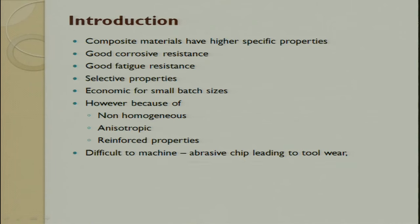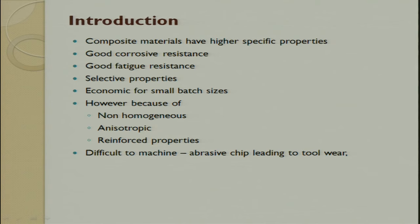The key differences: in contact machining the tool must be harder than the work piece; in non-contact it is not so. Second, material removal rate is high in contact machining, whereas in non-contact — since electrons, ions, and photons are very small — the removal rate is very low. Third, thermal damage is not present in conventional processes, but in non-conventional there is always a heat affected zone.